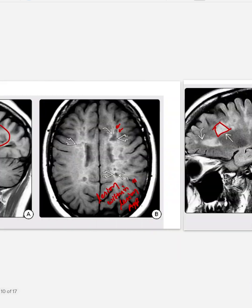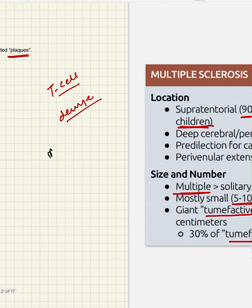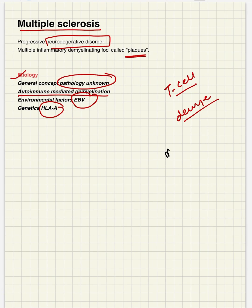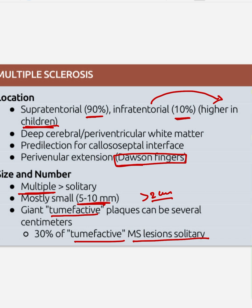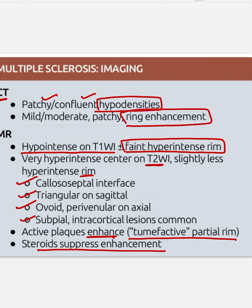In summary, multiple sclerosis is a progressive neurodegenerative disorder with multiple demyelinating foci called plaques. Contributing factors include Epstein-Barr virus, HLA, and autoimmune demyelination, or pathology may be unknown. It is supratentorial with deep cerebral periventricular predilection for the callosal-septal interface, periventricular extension, and Dawson's fingers. Lesions are multiple, mostly 5 to 10 mm, and can be tumefactive over 2 cm. On CT, hypodense; on MRI, T1 hypointense with faint hyperintense rim, T2 hyperintense; contrast enhancement suppressed by steroids.